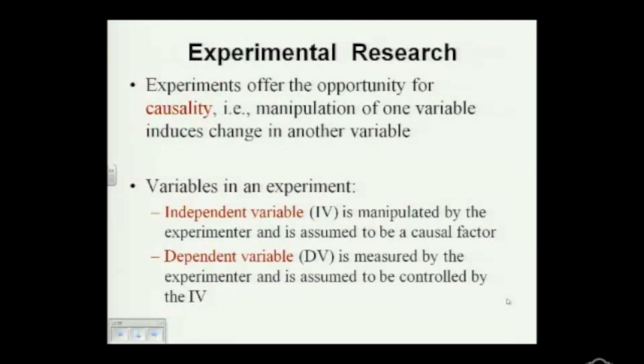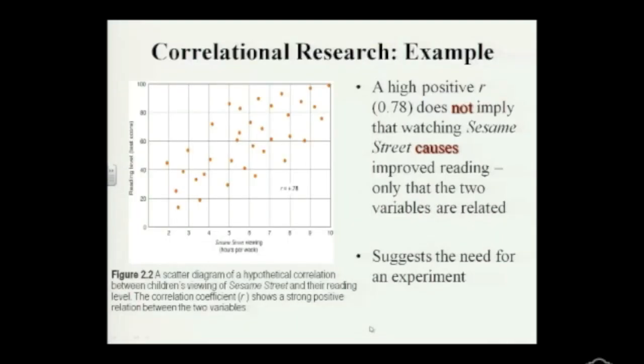So we actually started this problem with concluding from this research example that watching Sesame Street, is that where we left off? That we couldn't conclude that based on these data, or this scatterplot, that watching Sesame Street causes, right, improved reading. That's a big statement to make. And of course, the reason is because we cannot infer causality. Number one, we don't know which one causes what. Does Sesame Street cause you to have better reading? Or is it because you are naturally a better reader that you are more prone to watch Sesame Street? Or is it due to the third variable problem, which was what? What's the third variable problem?